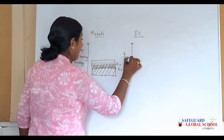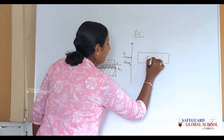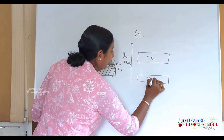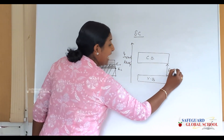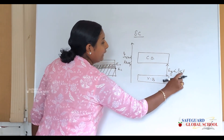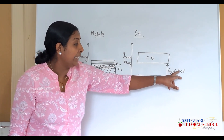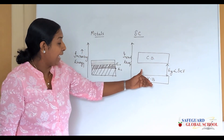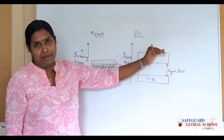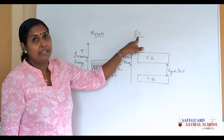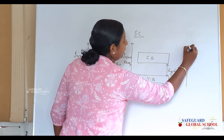For semiconductors, when we draw with increasing energies, there is a conduction band at the top and a valence band below it. The forbidden energy gap is less than 3 electron volts, meaning a valence electron needs less than 3 eV to cross from the valence band to the conduction band. Still, there is a chance of conduction in semiconductor materials.